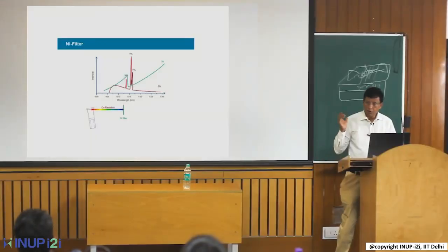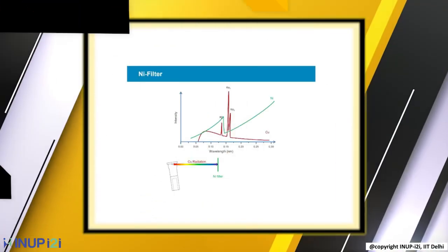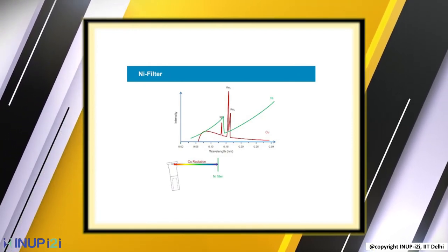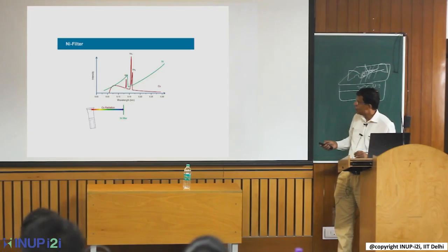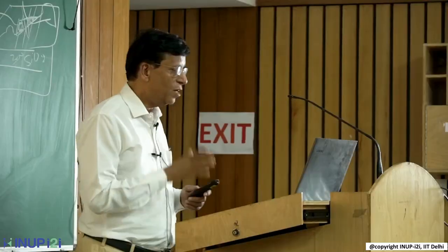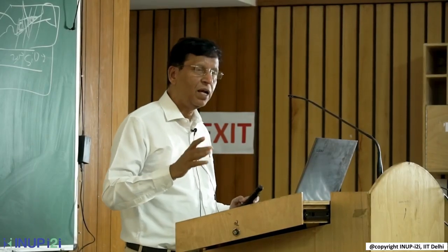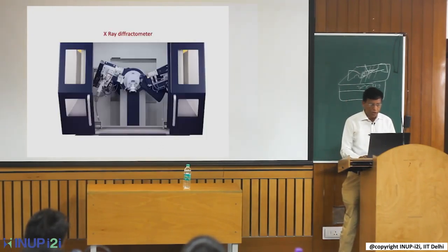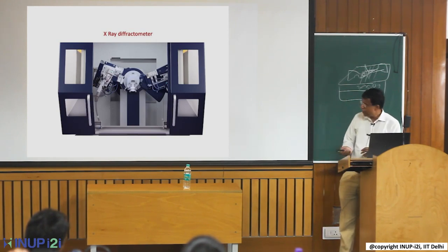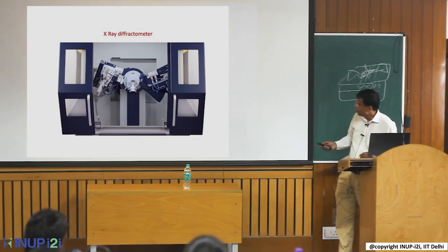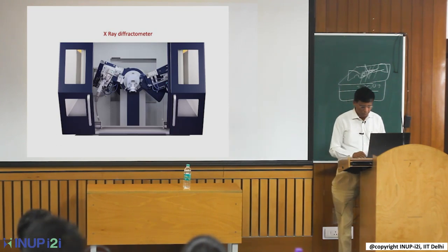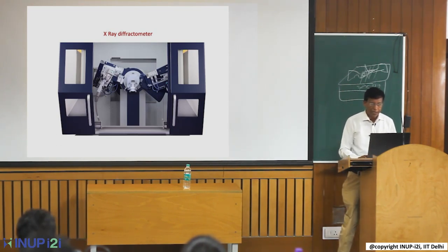For the instrument we use here, we use a nickel filter which eliminates all other radiations, leaving just the K-alpha 1 and K-beta lines. We know very precisely the wavelength of K-alpha, so we have the lambda value and from there we calculate the XRD. The instrument has an X-ray generator, a sample stage, and a detector that moves to record reflected X-ray at different values of theta.